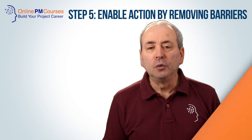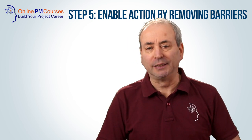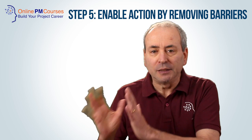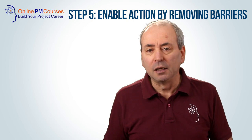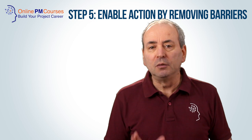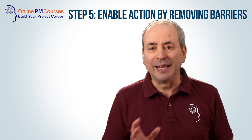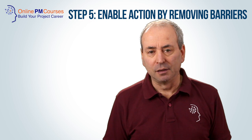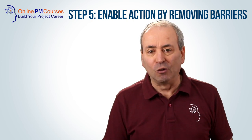Step five: enable action by removing barriers. You need to remove every possible barrier of policy, procedure, unproductive behaviours and mindsets. Organisations often find themselves in a siloed mentality where someone from one part of the organisation can't get things done in another — which is one of the reasons why your guiding coalition has to span the whole organisation. You also need authority from the top to suspend the rules and regulations that get in the way, and it means giving real power to your guiding coalition and devolving that power down to the volunteer army.